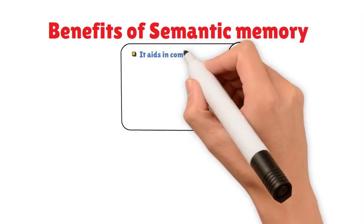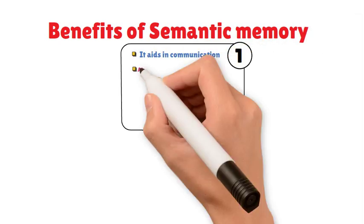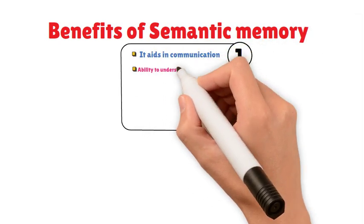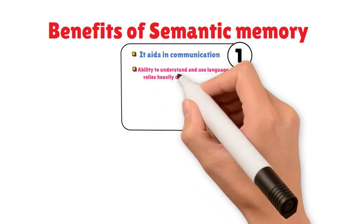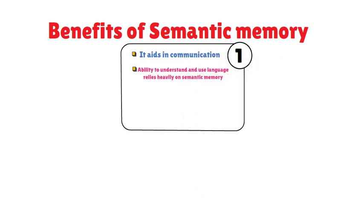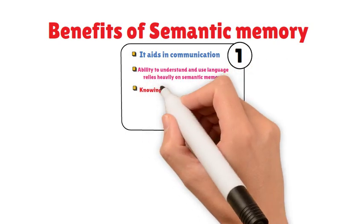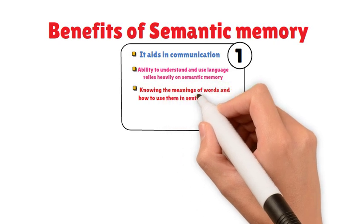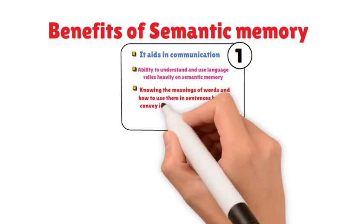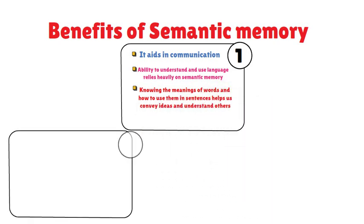First, it aids in communication. Our ability to understand and use language relies heavily on semantic memory. For instance, knowing the meanings of words and how to use them in sentences helps us convey ideas and understand others.